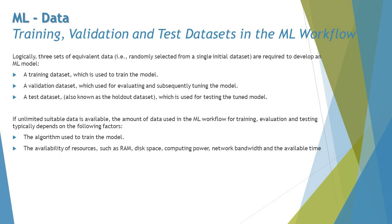In our previous segment we understood that preparing the data is not an easy job and requires a lot of effort to come up with a complete required set of data for ML models to be trained. Three categories of data are required to develop an ML model: a training dataset used for training the model, a validation dataset used for evaluating and tuning the model, and a test dataset — also known as the holdout dataset — used for testing the tuned model.